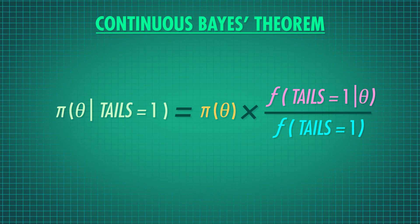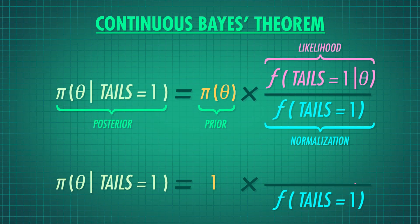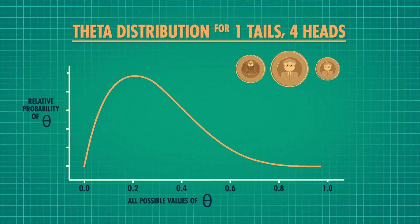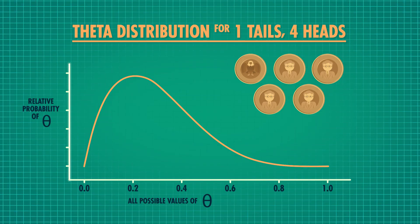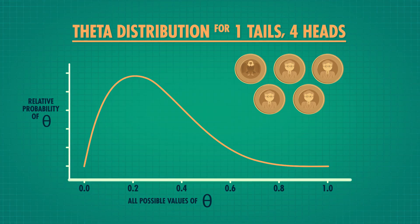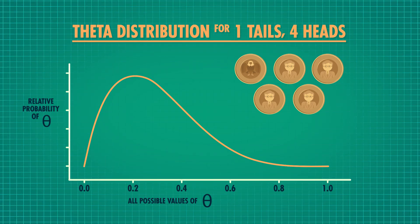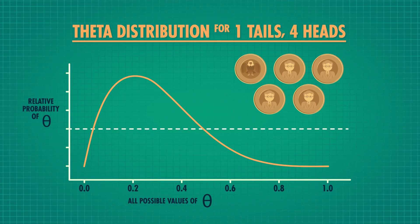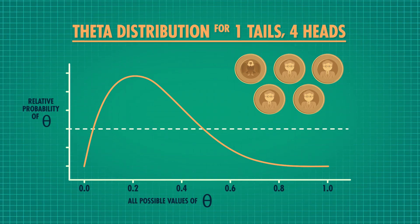Here's Bayes' theorem for this continuous problem. We won't get too stuck on the math here, but we can see that this is the same old Bayes' theorem we've seen before, just continuous. When we plug in this formula to a graphing program to show our posterior, it looks like this. The y-axis tells us the relative probability of theta — in this case, theta is the probability of getting tails. The x-axis shows us all the possible values of theta between 0 and 1. We can see that we took our prior distribution, the dotted line, and updated it using the likelihood of the data, which told us the probability of getting 1 out of 5 tails for every potential probability of getting tails that a coin could have. Once we updated our prior beliefs, our posterior beliefs are represented like this — the solid line.